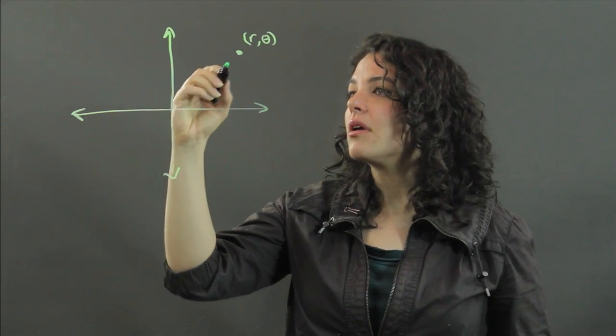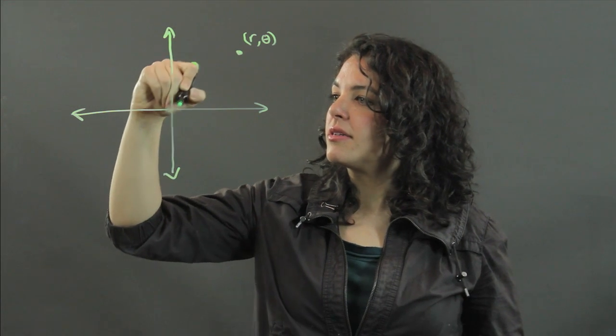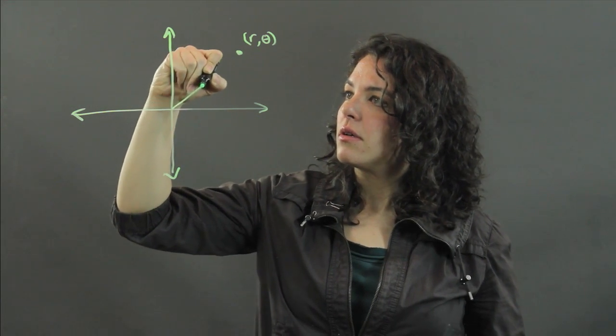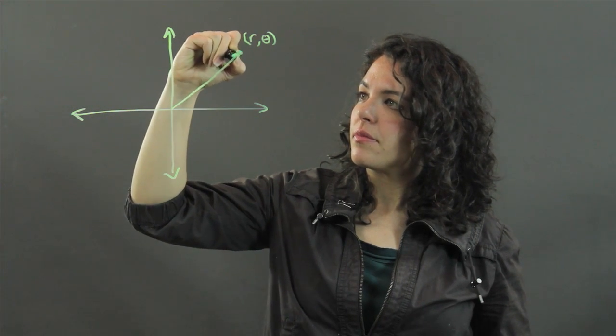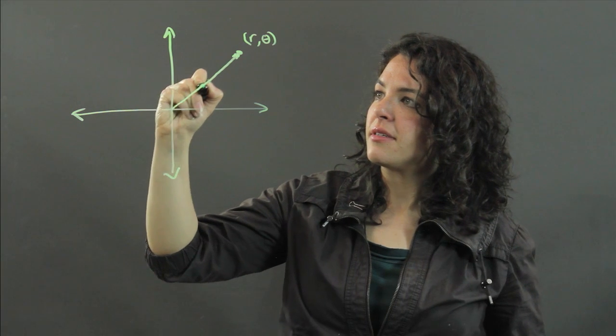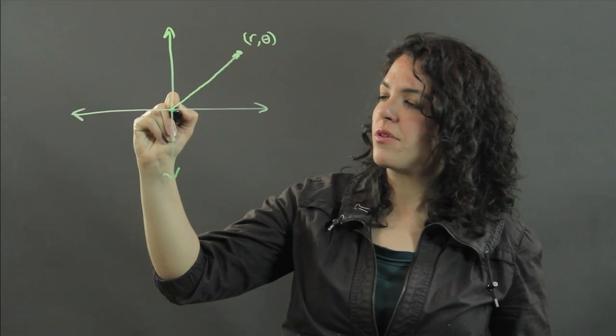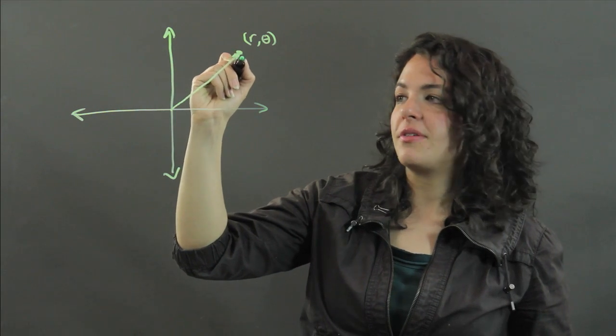what that is, is r is the length of this vector from the origin to my point r theta.